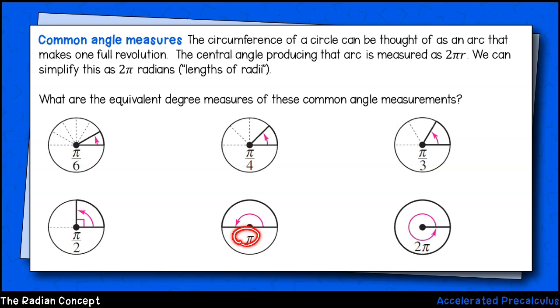A half rotation will be π radians, that's 180 degrees, and one half π radians will be 90 degrees. One third π makes 60 degrees, one fourth π makes 45 degrees, and one sixth π is half of a 60 degree angle, which will be 30 degrees.